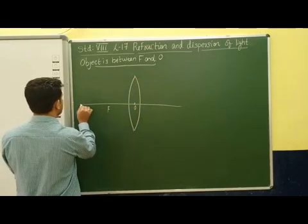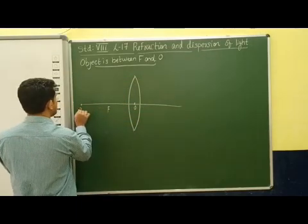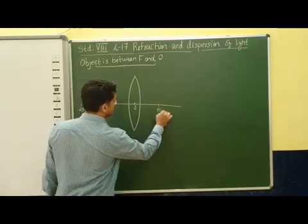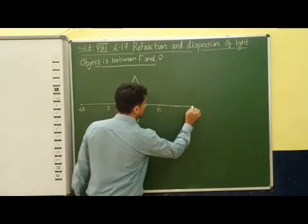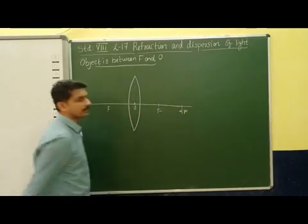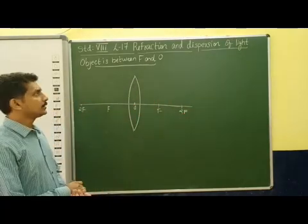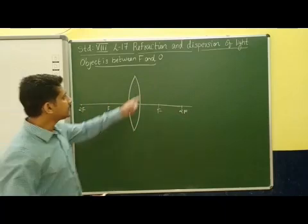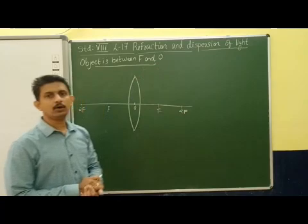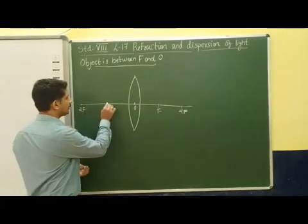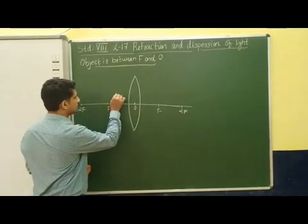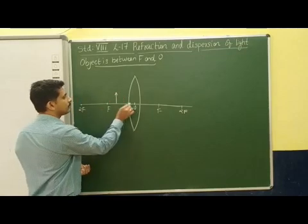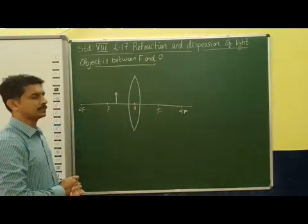This is the focus and on the other side also we are marking the focus and the second focus. So in this case we are going to discuss the situation where the object is between the focus and the optical center. That means this is the position of the object.